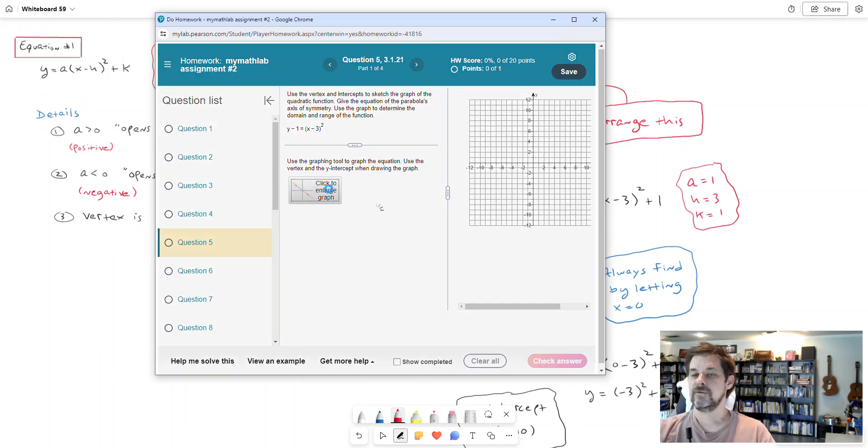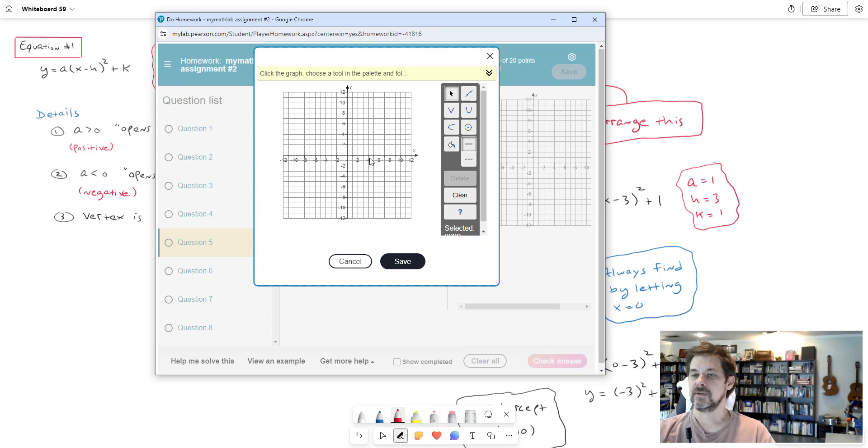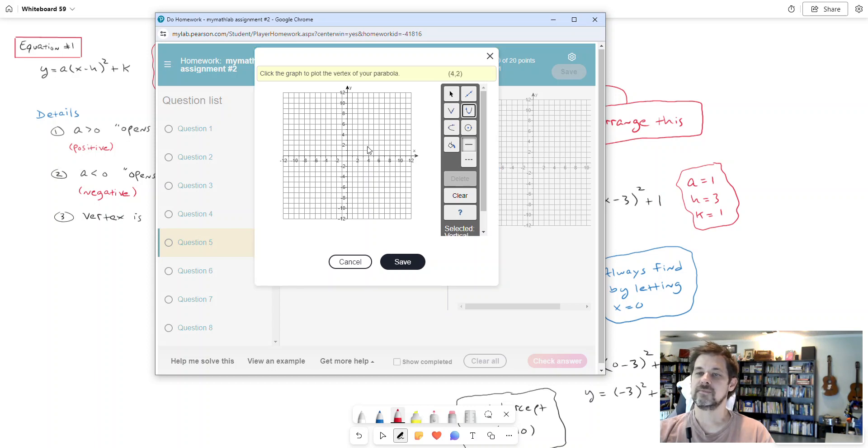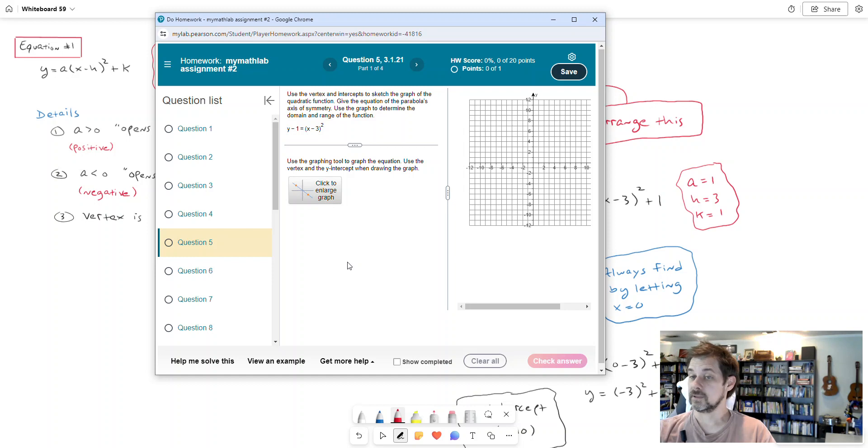So the vertex is three for the x coordinate one for the y coordinate. So I'll use that when I plot my graph. Now, if you tried to do it with just that, I'm going to put three and one down. It doesn't really take shape with just that one point. We need another point. So notice though, it did say use the vertex and the y intercept.